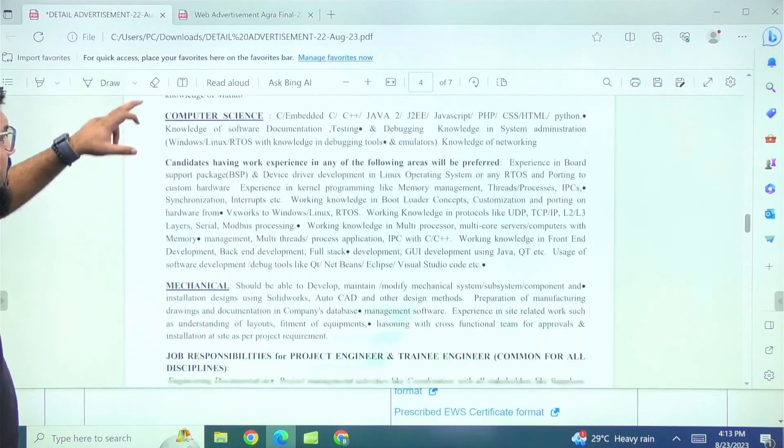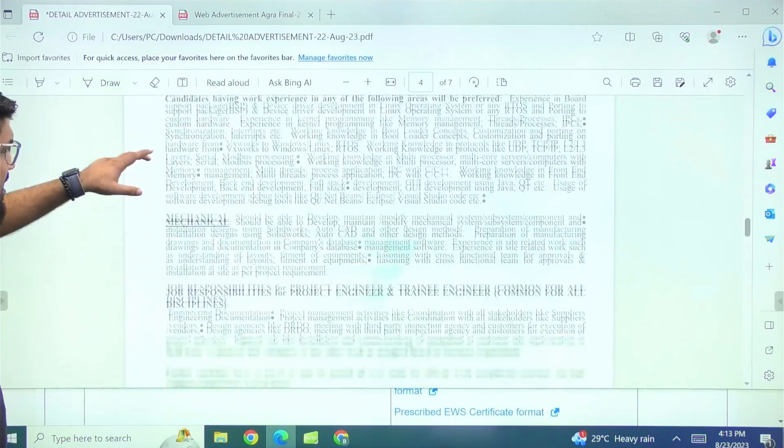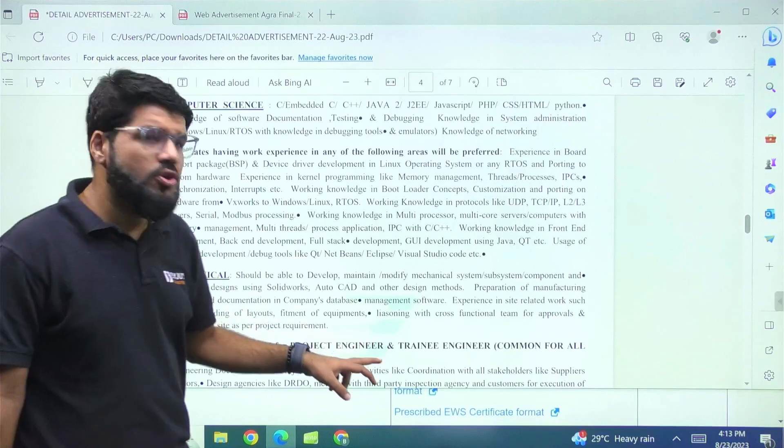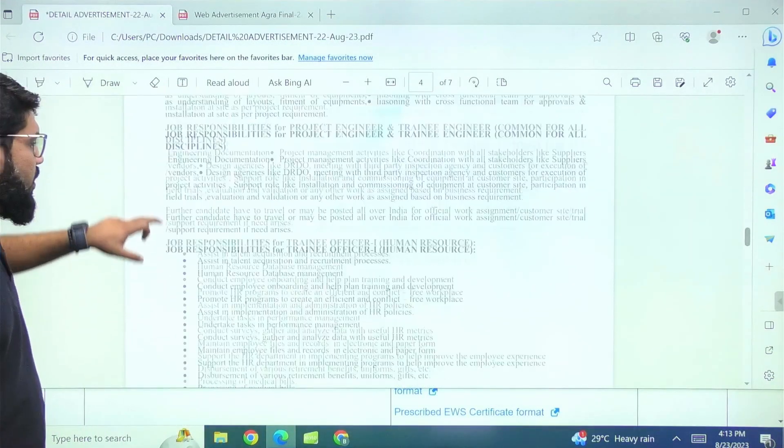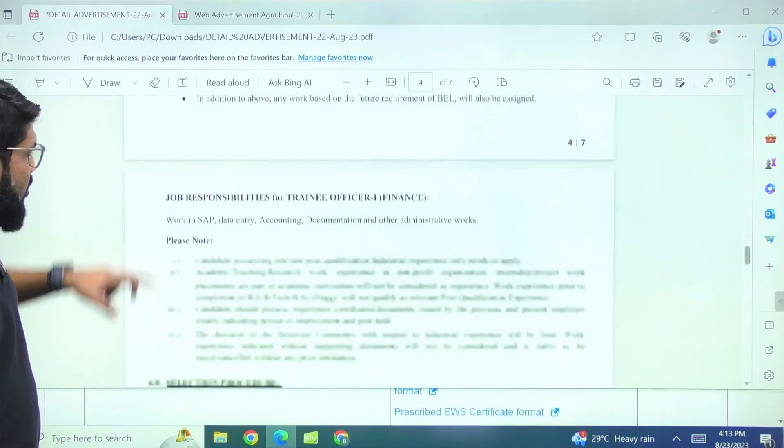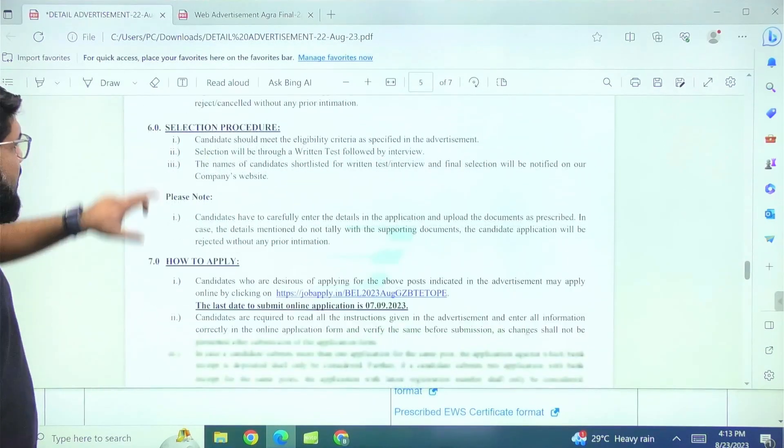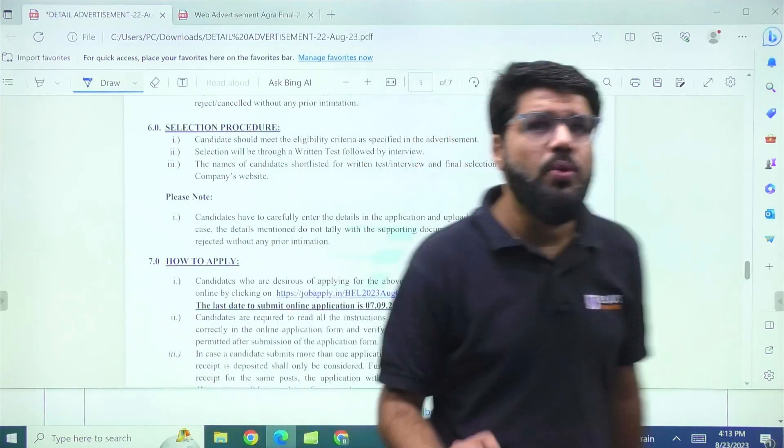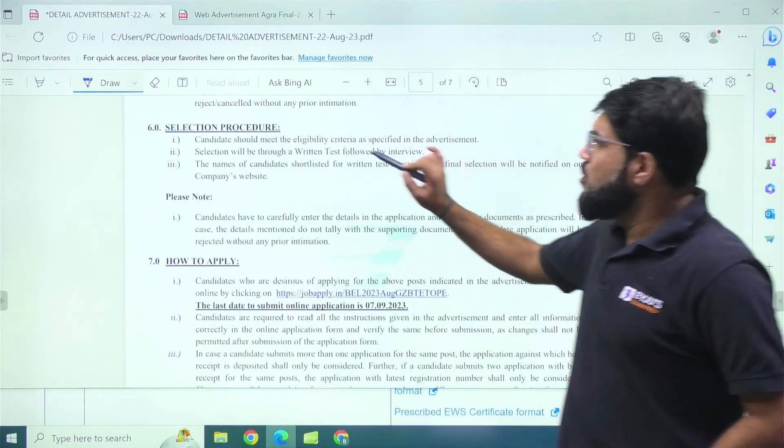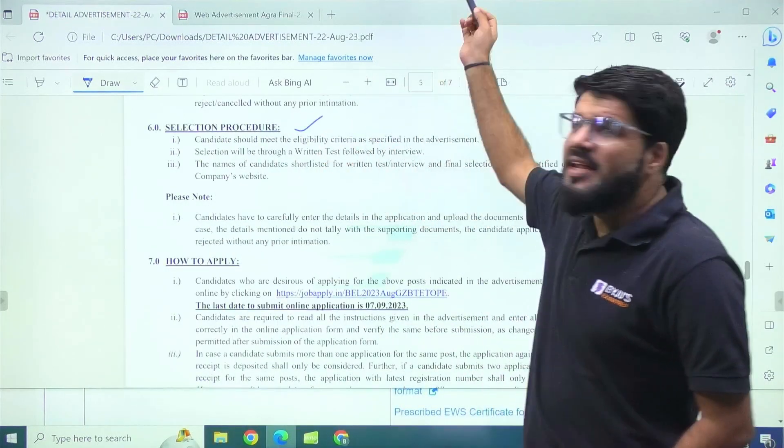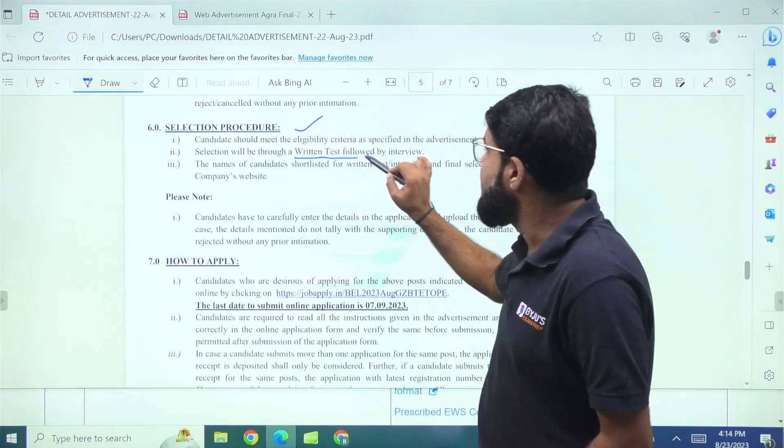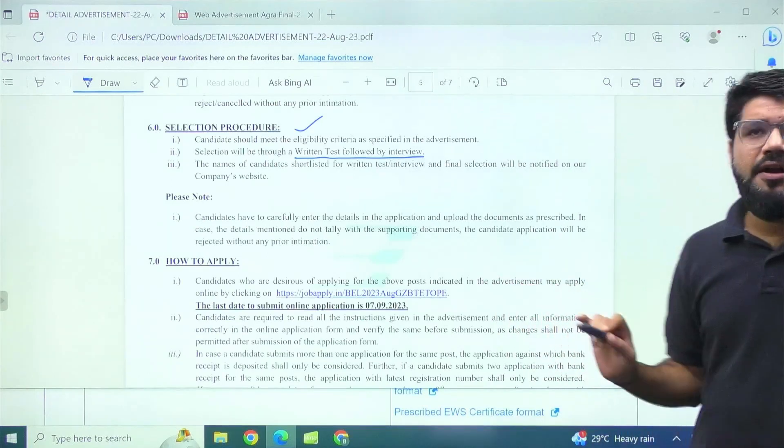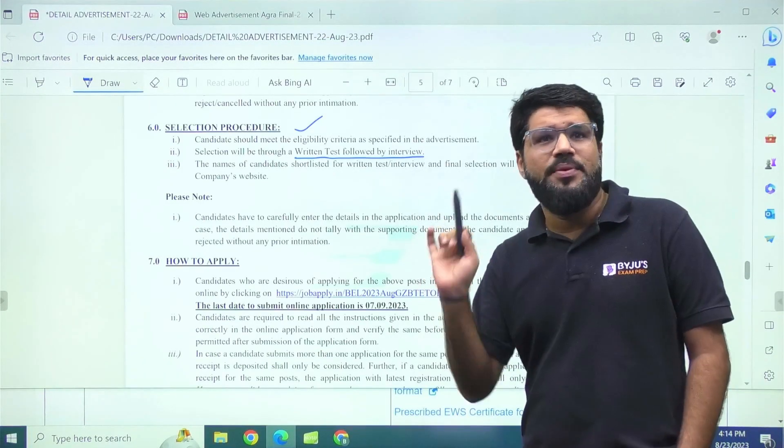Now, if you move ahead to the next similarly, there are some tools required from computer science and mechanical students. So this also you must go through if you are applying for project engineer. Now, let's move ahead to the next very important and how the selection is going to occur. So the candidates meeting the eligibility criteria, which I have mentioned, they can apply and selection will be through a written test followed by an interview. Of course guys, be ready, there is going to be written test.